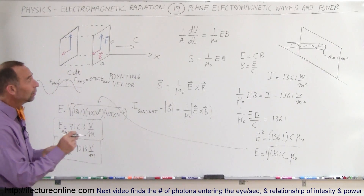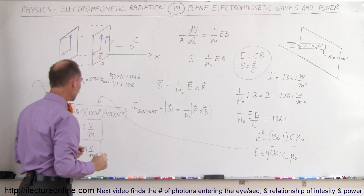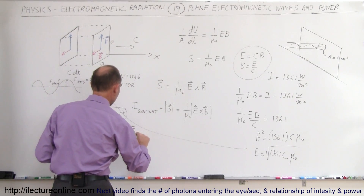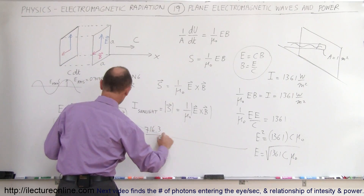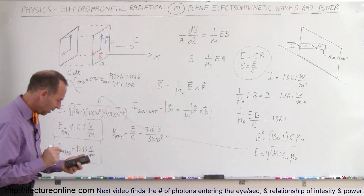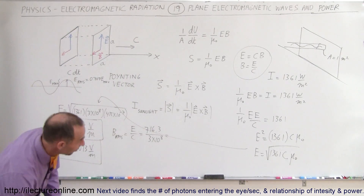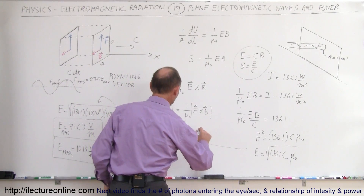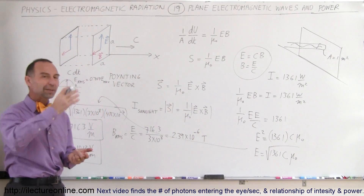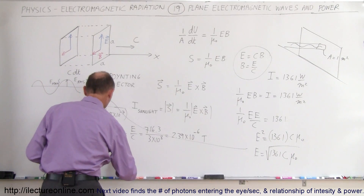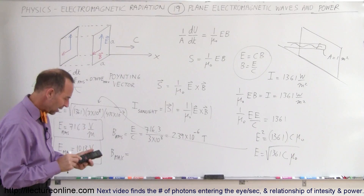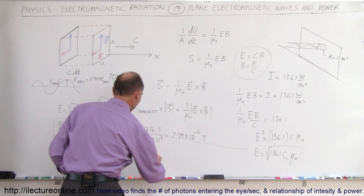What about the magnetic field oscillations? Using the relationship between the electric and magnetic fields, B_RMS equals E divided by C. That's 716.3 divided by 3×10⁸, which equals 2.39×10⁻⁶ Teslas — the RMS oscillation value of the magnetic field in sunlight. To find B_max, divide by 0.707, giving 3.38×10⁻⁶ Teslas.